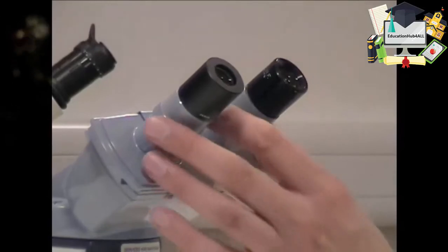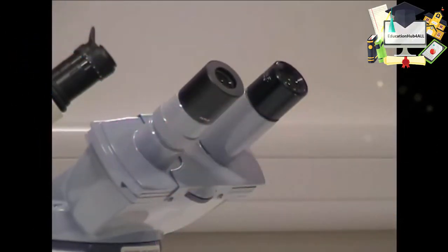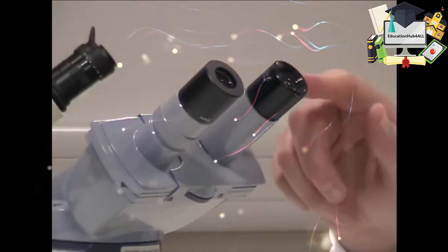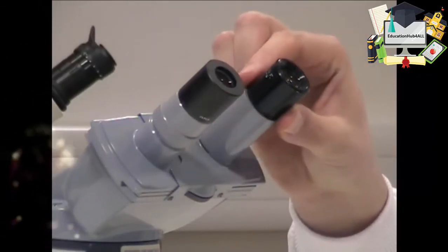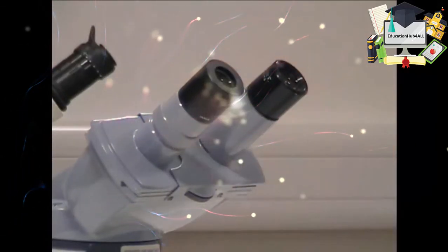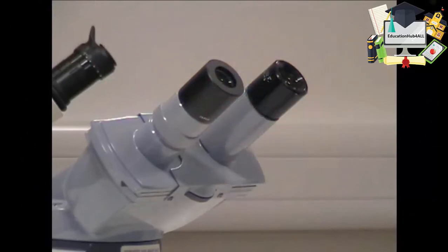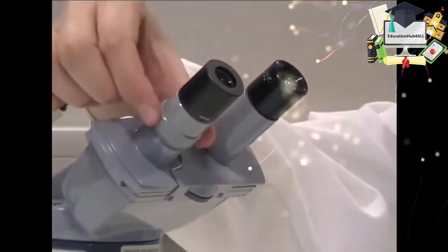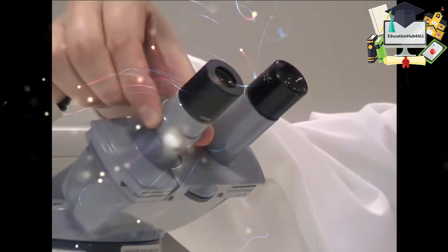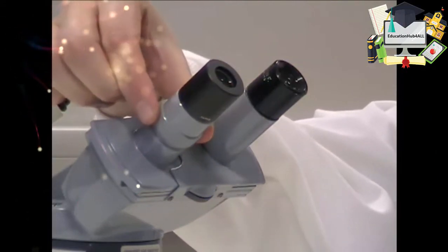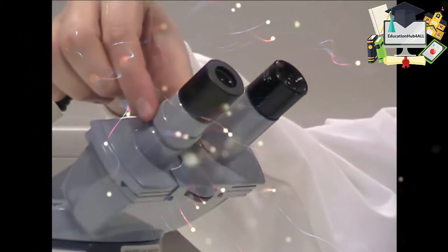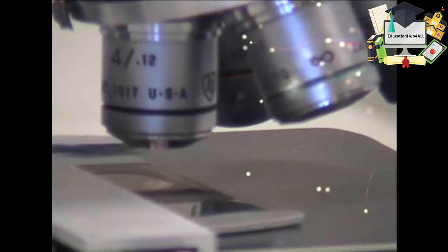If you have a microscope with two eyepieces like this one, make sure that each eyepiece is showing you a focused image. Do this by first looking down just one eyepiece and using the main focusing controls to get good focus and then look down the other eyepiece which has its own focus adjustment here and carry out fine adjustment looking down it with just the other eye. You should now have an in focus image of your slide.